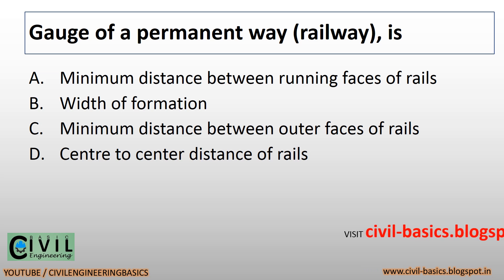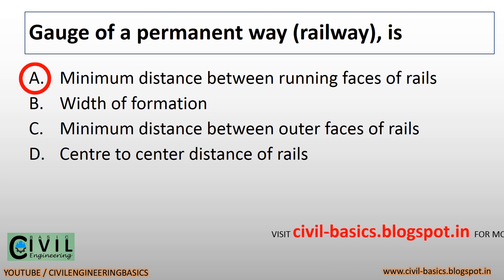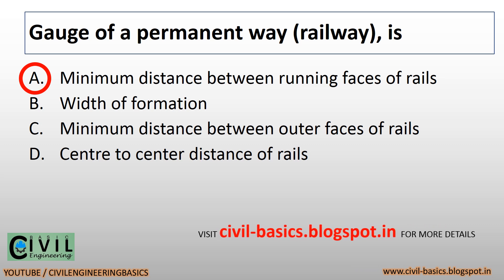Gauge of a permanent way (railway) is the minimum distance between the running faces of rails.